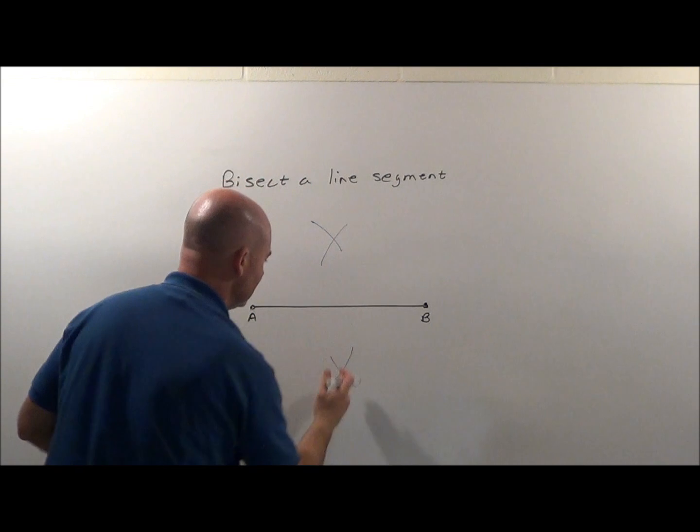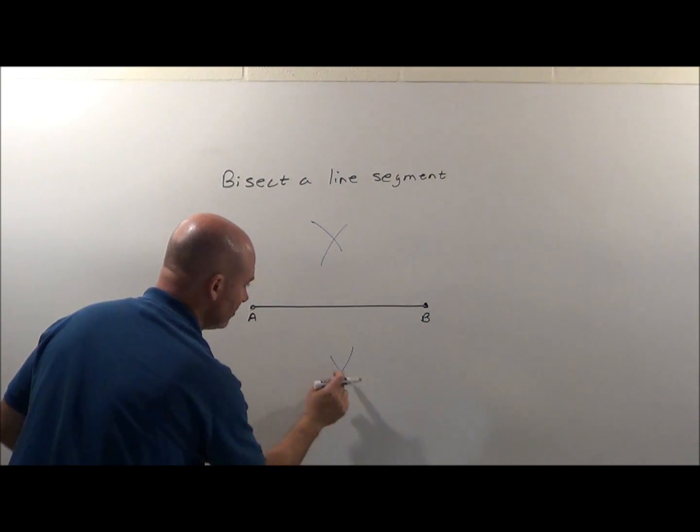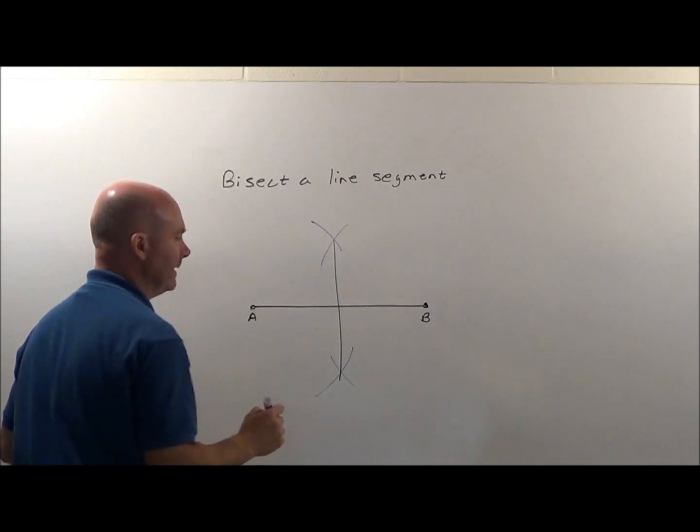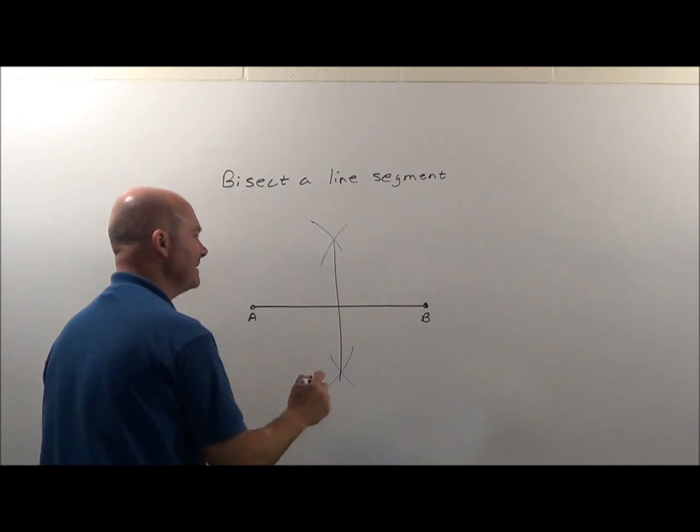And you'll notice that it has an intersection right here and right up there, and now I simply can draw that line. That line is going to bisect it.